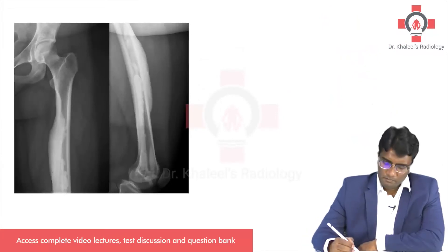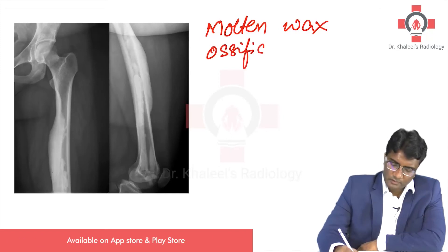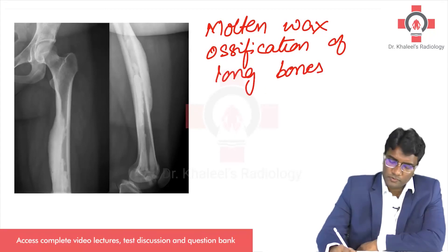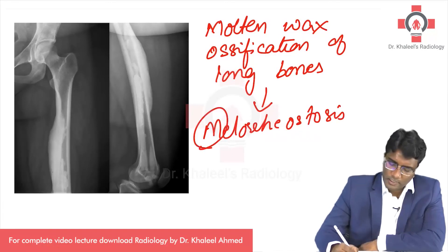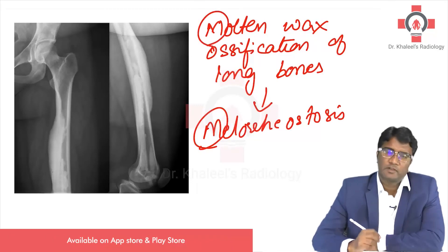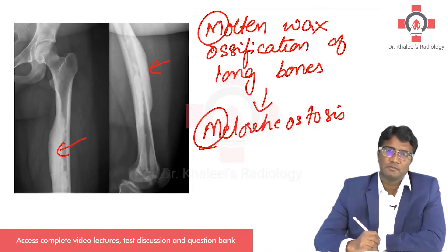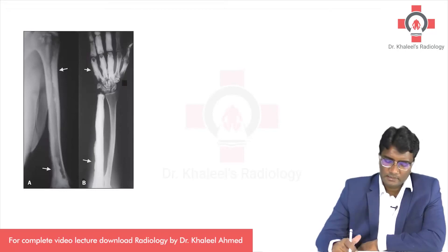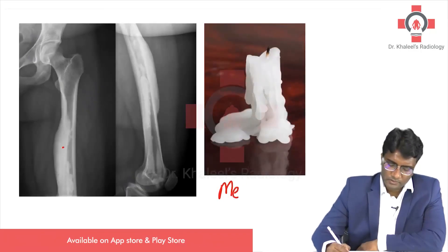Look at this next image. You are seeing molten wax ossification of long bones — this thick molten wax-like ossification is the feature of melorheostosis. You can remember M4M: molten wax ossification of long bones. Please look at other similar images; melorheostosis has this thick molten wax-like ossification.